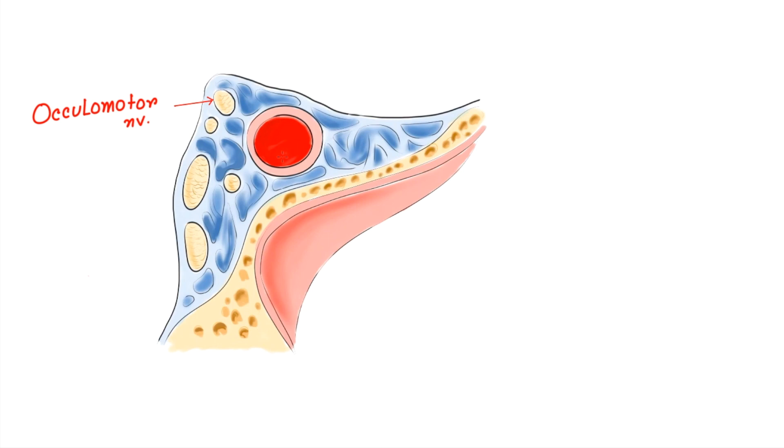Superior to inferiorly, structures present in the lateral wall are oculomotor nerve, then trochlear nerve, below the trochlear nerve there is ophthalmic branch and maxillary branch of trigeminal nerve.